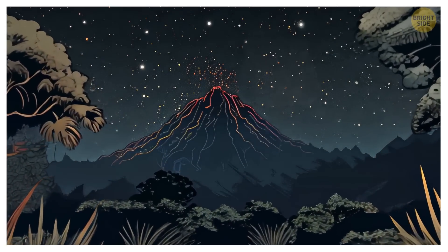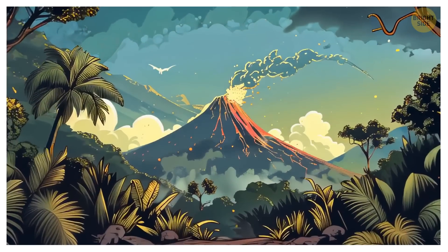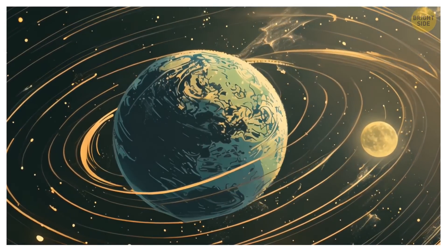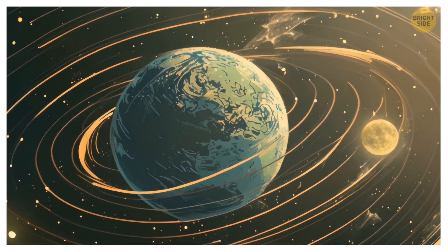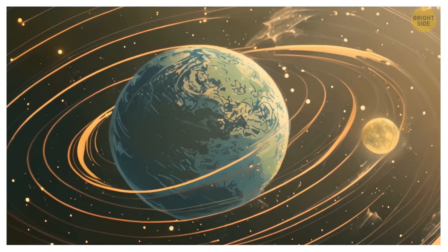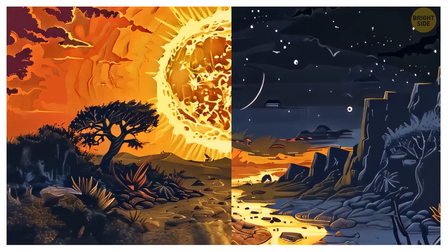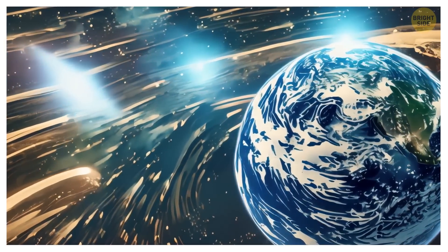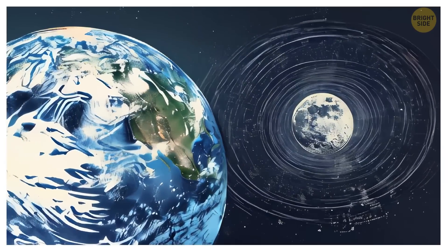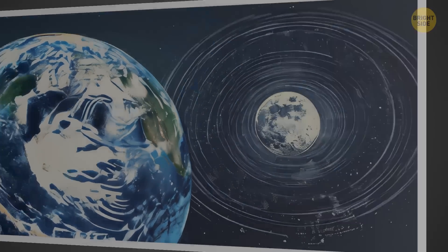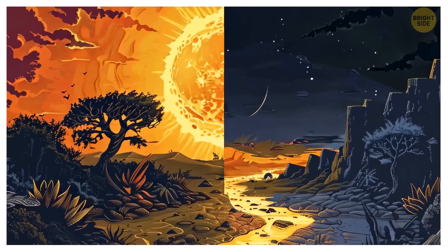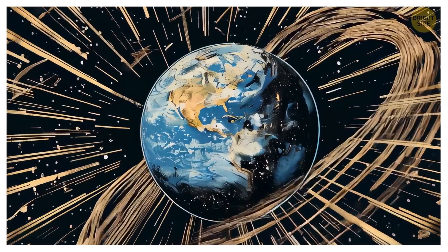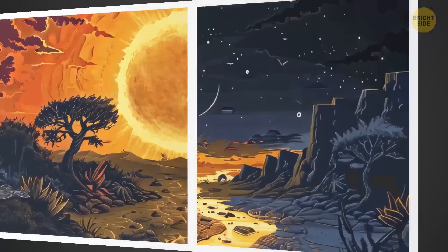Before the Moon formed, the Earth was a much different place. If you could have just one day on Earth without the Moon, you'd first be surprised by the days and nights — they wouldn't be as stable as they are today because the Moon helps keep Earth's axis stable. Days were shorter back then; the Earth had been rotating much faster before the Moon formed. Its gravitational pull slowed the rotation of our planet, which means days got longer.